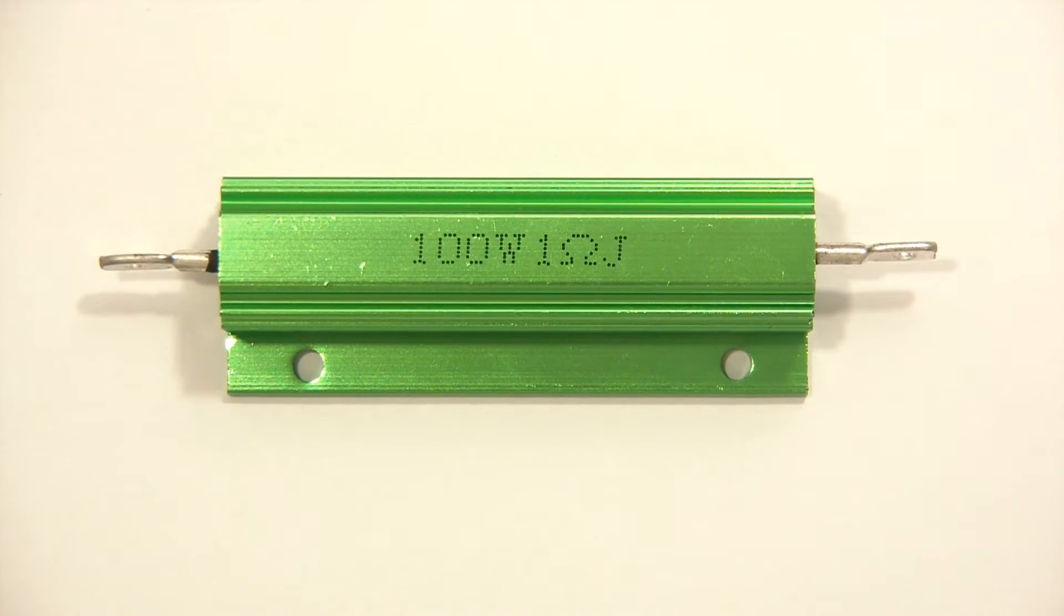So why would you want to do that? Well, usually you'd want to do that when you're trying to discharge a cell and you might want to discharge a cell so that you can find its capacity. So if you were to discharge a cell at a known amount of wattage and a known amount of time, you could therefore know a cell's capacity. That's what you could use a power resistor for.